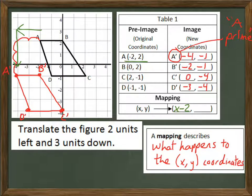So I can write this in the mapping as X minus two. That's saying I'm taking X and I'm subtracting two from it. What about the Ys? So this Y started at two, ended at negative one. This one started at two, ended at negative one, started at negative one, ended at negative four. We're taking all those Y coordinates and subtracting by three.